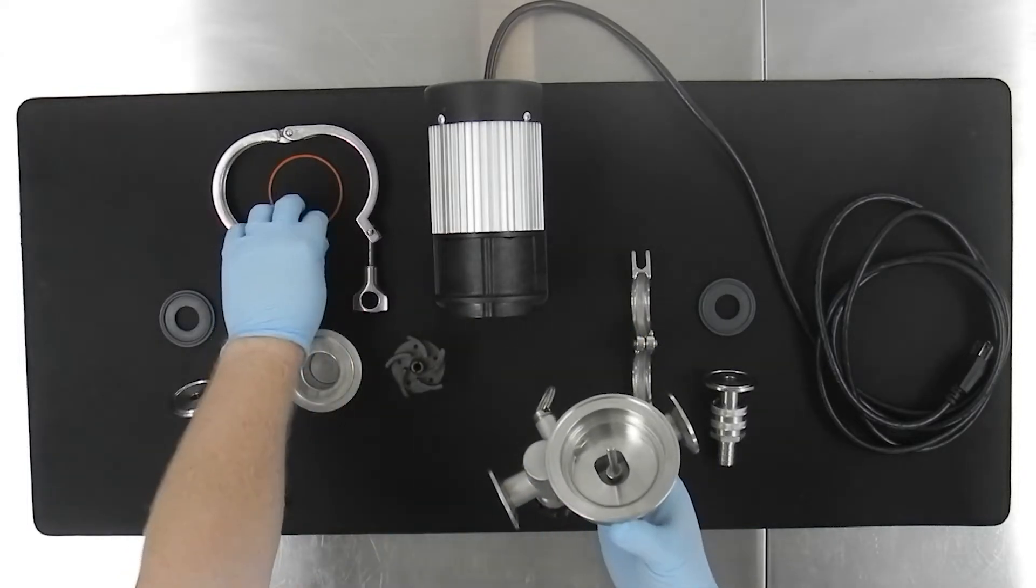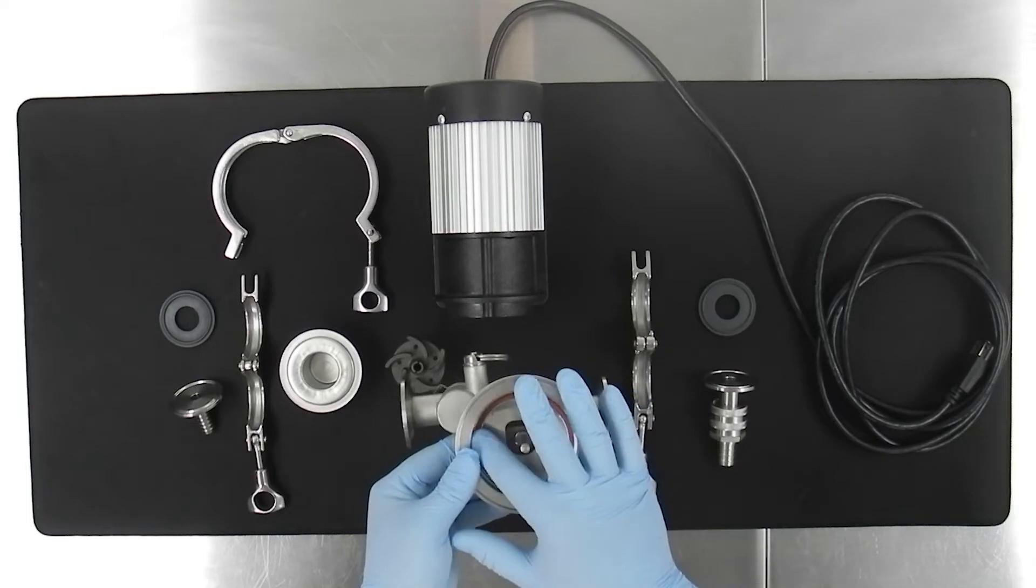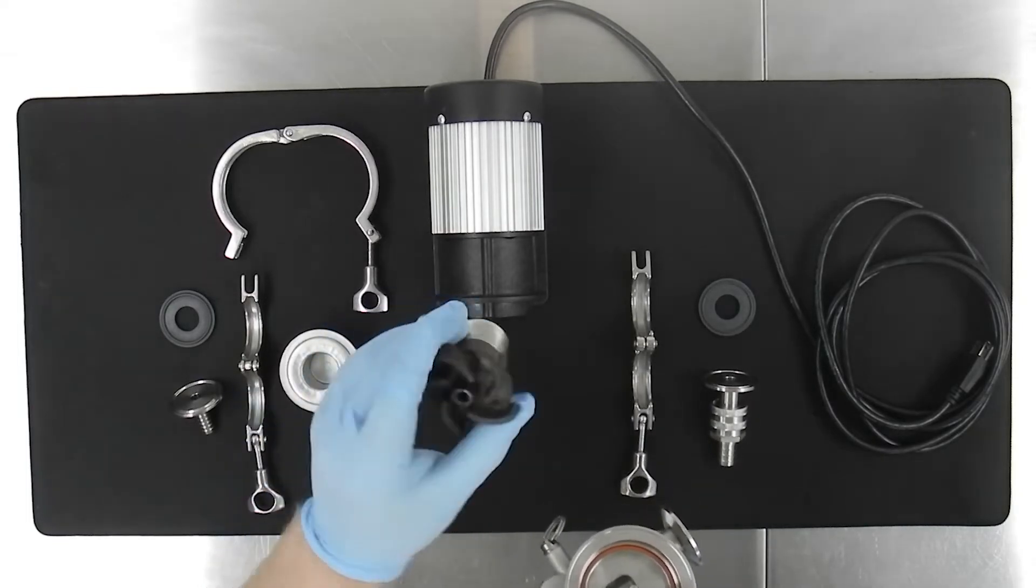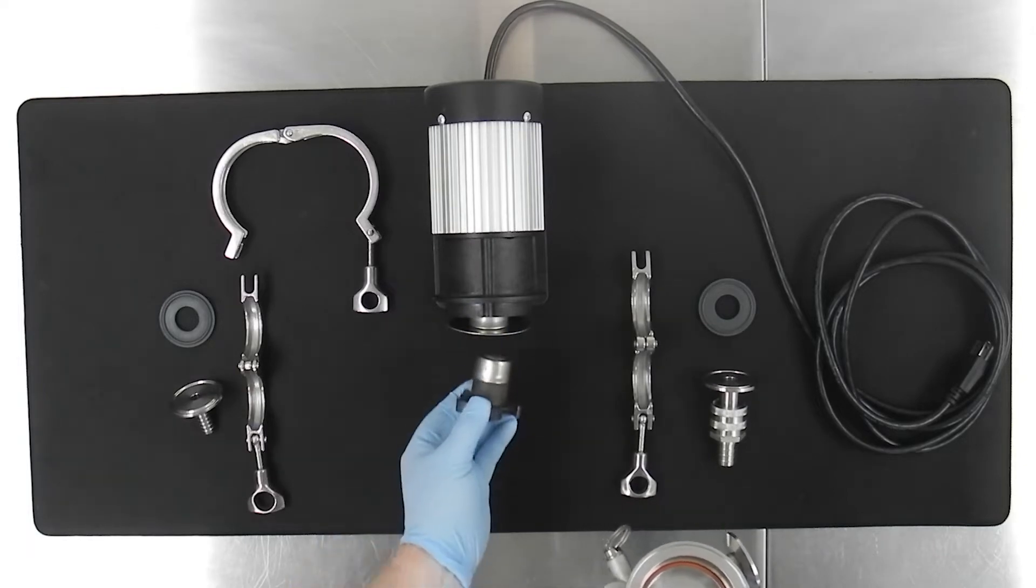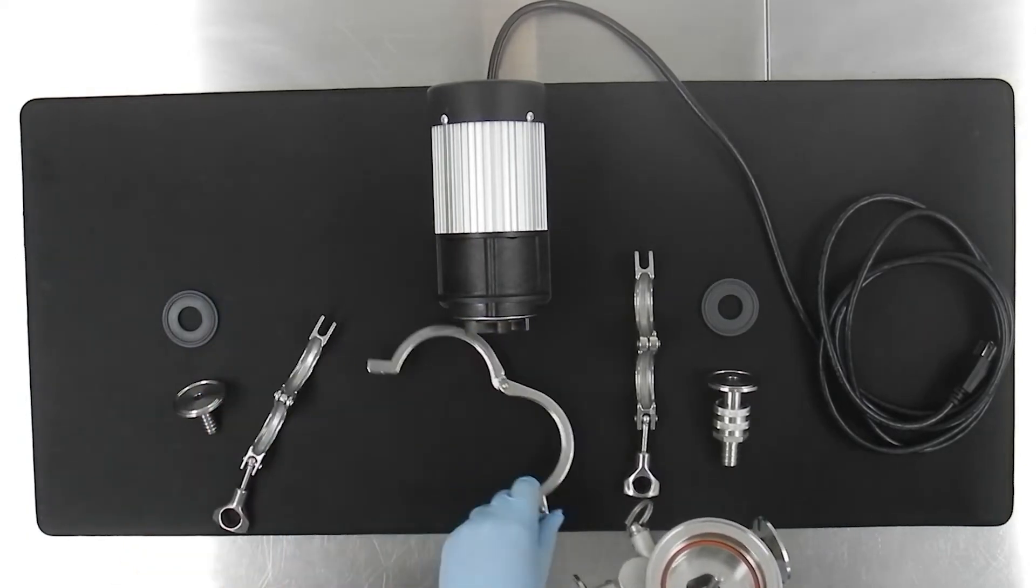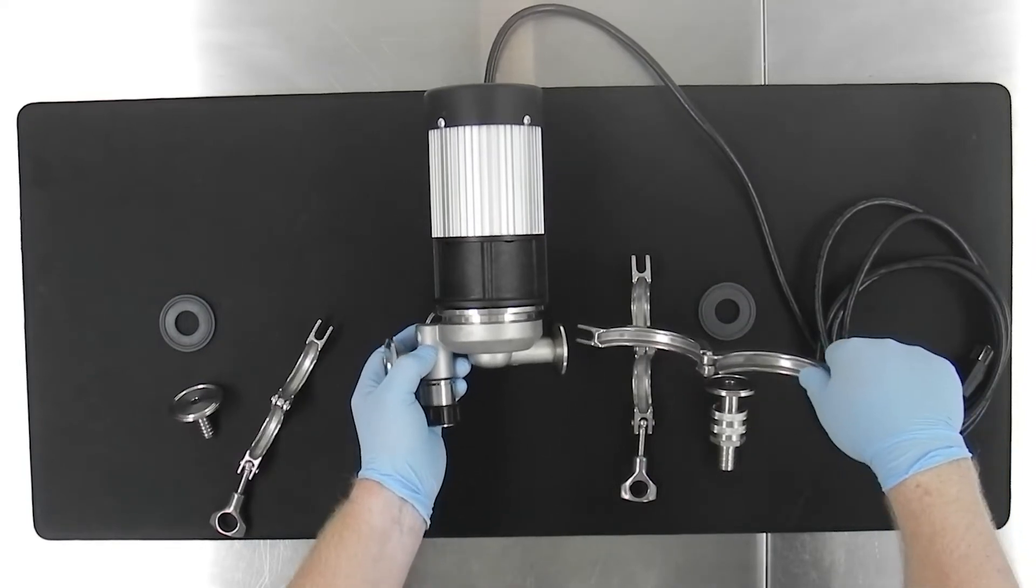Now we assemble the magnetic drive pump. Insert the o-ring, make sure it's fully seated. Place the impeller and the barrier inside the pump housing, then we mount the pump head and affix the triclamp.